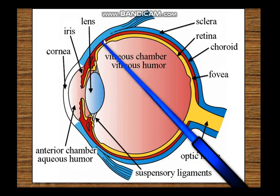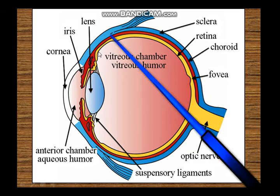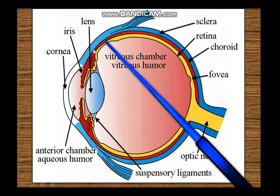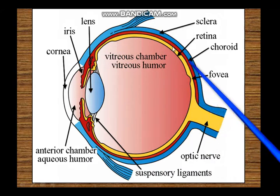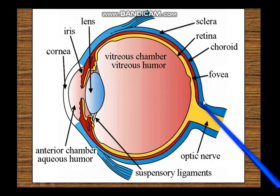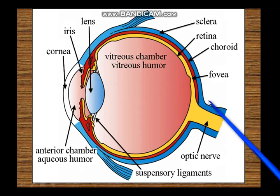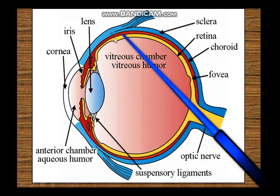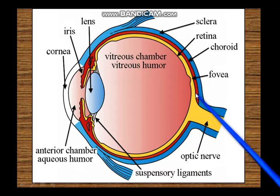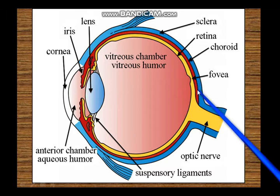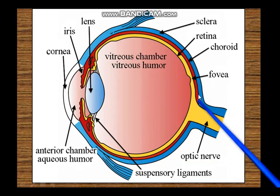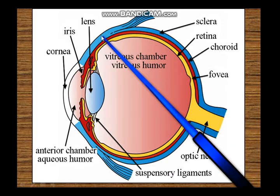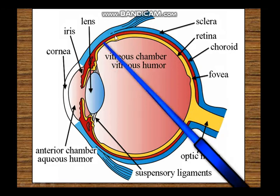The middle vascular coat — posteriorly it forms the choroid, anteriorly it forms the ciliary body and the iris. The choroid has loose tissue, collagen fibers, melanin pigment, and a very large number of blood vessels derived from the long and short posterior ciliary vessels. These pass between the sclera and the retina through the choroid. This vascular layer is also called the uveal tract because from inside the eyeball it looks purplish — like a grape.